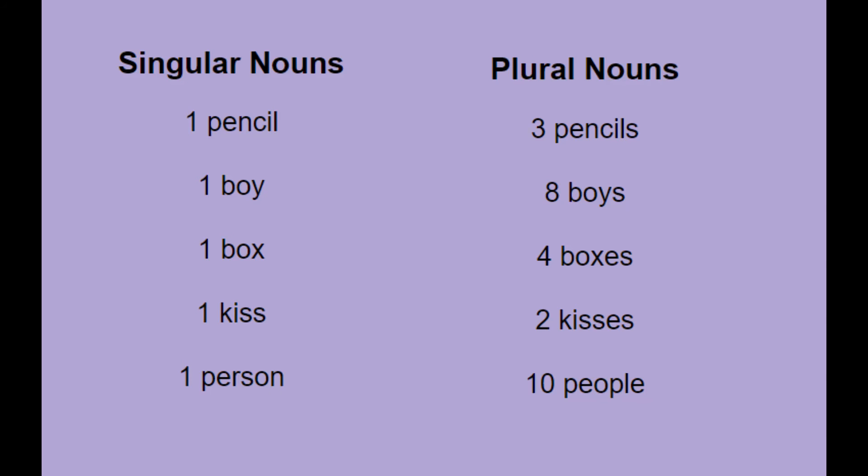One girl is a singular noun, but girls is a plural noun. Most nouns become plural by adding an S or Z sound — one cat, two cats; or one dog, two dogs. Sometimes the ES sound is added if the word already ends in an S, Z, CH, or SH sound. So one kiss would become two kisses.